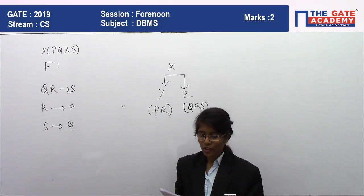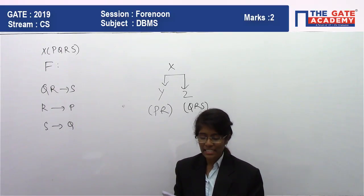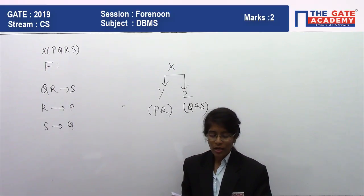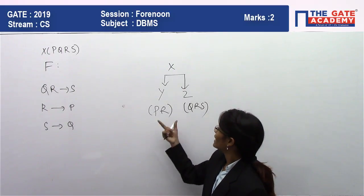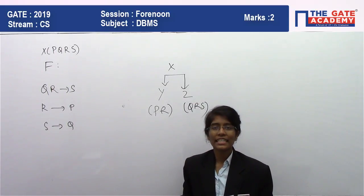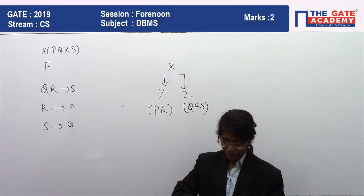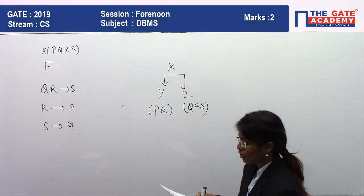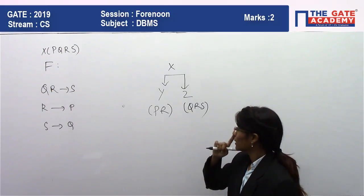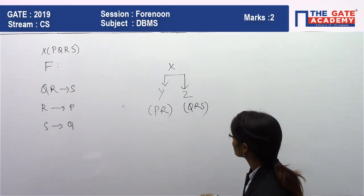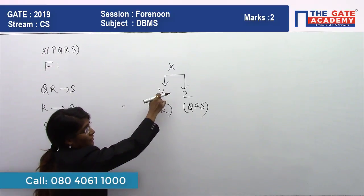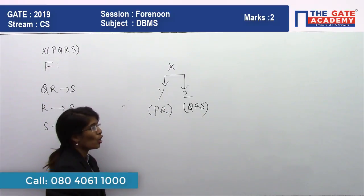First we are going to check Statement 2 — whether the decomposition is dependency preserving — so that we can find the functional dependencies of these two tables and then determine if they are in BCNF. For dependency preservation, we need to find the functional dependencies of each decomposed table.